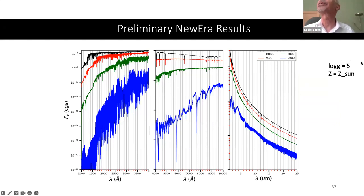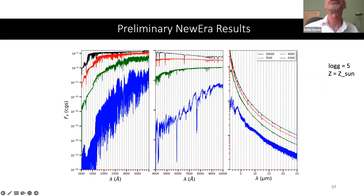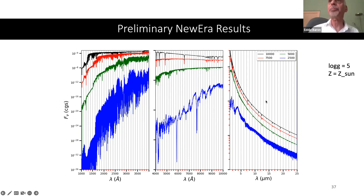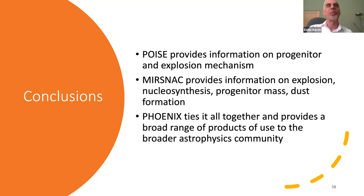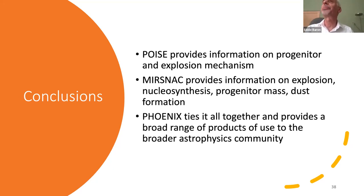You can see the UV region with rich line blanketing, the optical, the JWST region with the CO fundamental. To conclude: POISE provides information on progenitor and explosion mechanism; MIRSNAC provides information on explosion nucleosynthesis, progenitor mass, and dust formation; and Phoenix ties it all together, bringing a broad range of products of use to the broader astrophysics community. Thank you.